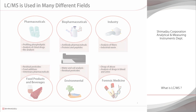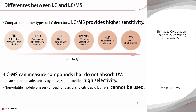So what are the differences? In general, LC-MS provides better sensitivity than LC and is suitable for the analysis of compounds at low concentrations. UV is typically used as the detection method with LC, but LC-MS can even measure compounds that do not absorb UV. In addition, compounds are separated by their particular mass, so separation selectivity is higher than with LC, making it suitable for complex samples.